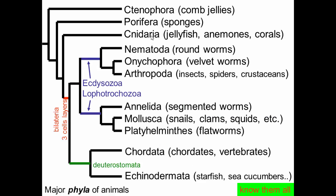This is a phylogeny of the major phyla of animals. Basal are ctenophores, also called comb jellies, and then porifera, and then cnidarians — jellyfish, anemones, and corals. Cnidarians look a lot like ctenophores, but they have stinging cells. That's a synapomorphy for cnidarians.